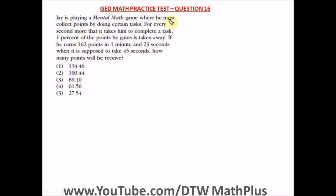Question 16 of the GED Math Practice Test Part 1 — that's the part with a calculator. It says: Jay is playing a mental math game where he must collect points by doing certain tasks. For every second more that it takes him to complete a task, 1% of the points he gains is taken away. If he earns 162 points in 1 minute and 23 seconds, when it's supposed to take 45 seconds, how many points will he receive?